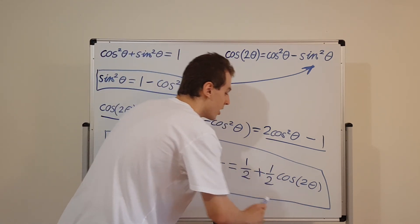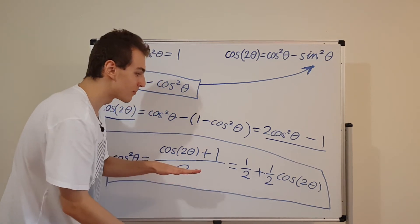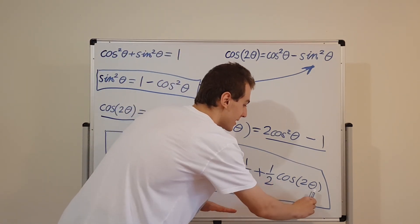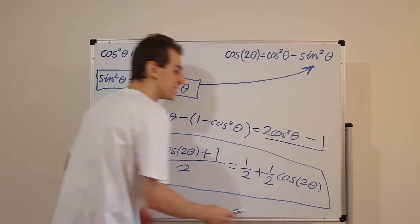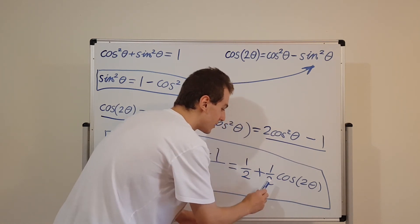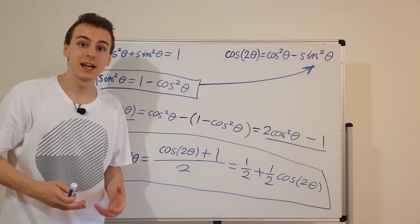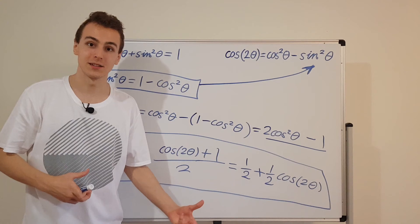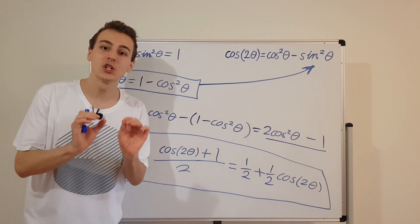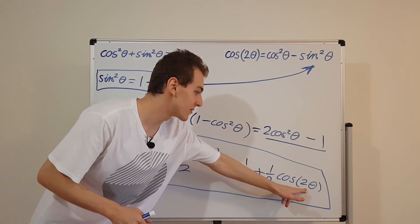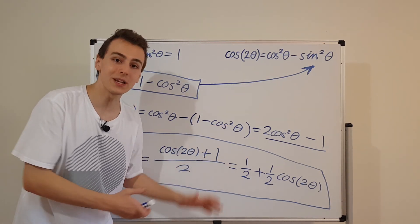Why split it up this way? This identity tells us that squaring the cosine is the same as a vertical translation of one half unit up, plus adding a scaled version of cosine 2θ with a factor of one half out front. So squaring is equivalent to doubling the angle, scaling the cosine function, and translating it vertically. Cos squared of θ is just another version of the cosine function with doubled frequency, halved amplitude, and a vertical shift — which also means it can never be negative.